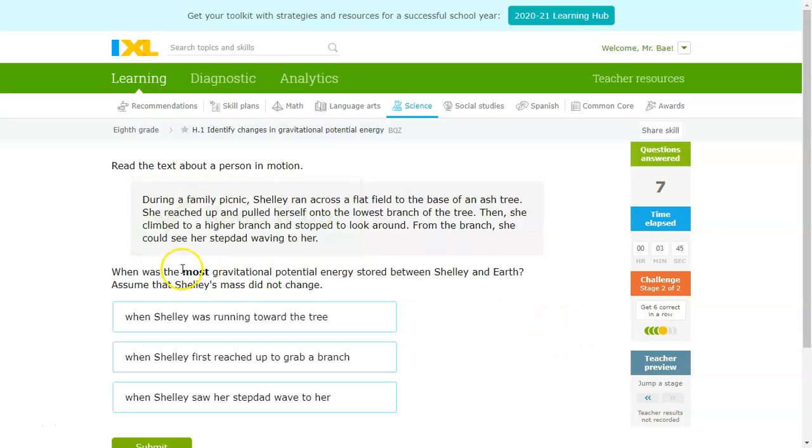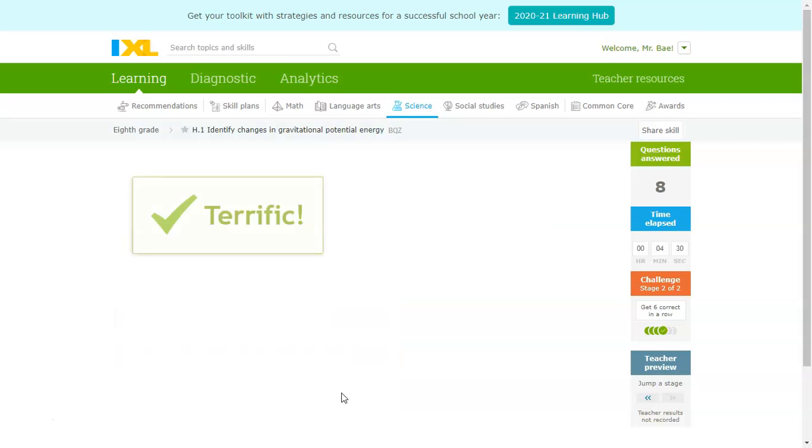We'll do one more. Once again, this is the most gravitational potential energy. So, this is when the object is at its highest height compared to the Earth. During a family picnic, Shelly ran across a flat field to the base of an ash tree. She reached up and pulled herself onto the lowest branch of the tree. Then, she climbed to a higher branch and stopped to look around. From the branch, she could see her stepdad waving to her. So, it looks like she was climbing. So, that part is important. Shelly was running toward the tree, she's on the ground still. Reached up to grab a branch, she's getting up higher. When Shelly saw her stepdad, this is when she was on top of the tree. So, this is the highest height. That would be the greatest potential energy.